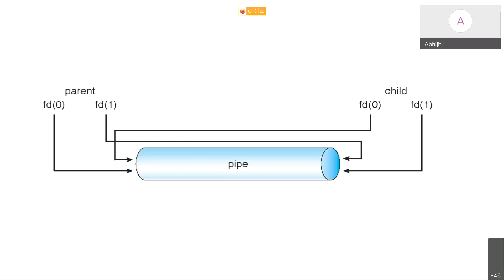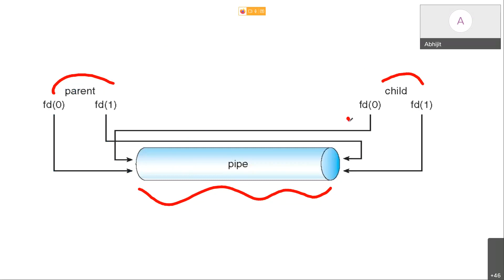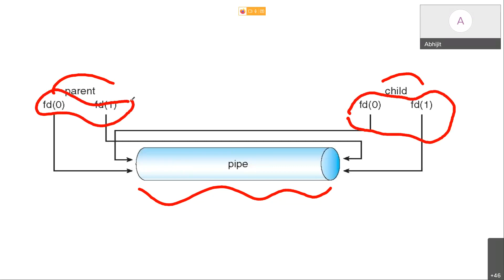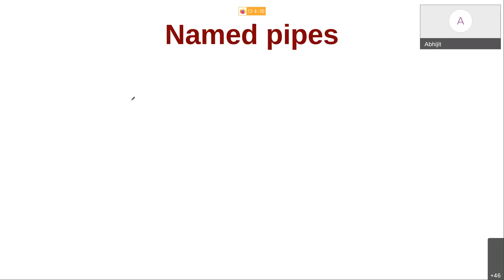Pictorially, the pipe looks like an array or buffer internal to the kernel. What the kernel gives to each process — shown here as a parent and child process — is a pair of file descriptors. It is using this pair of file descriptors that communication actually happens. Let me explain by drawing a diagram, but before that I will show you some code.